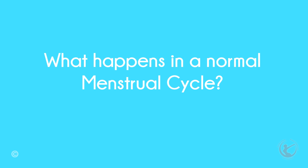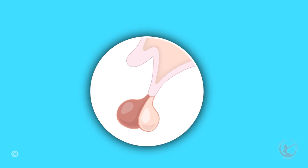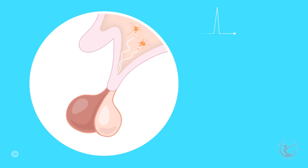What happens in the normal menstrual cycle? A normal menstrual cycle is controlled at many levels. The cycle is dependent initially on the pulsatile release of a hormone called gonadotropin-releasing hormone, or GNRH, from a gland in the brain called the hypothalamus.